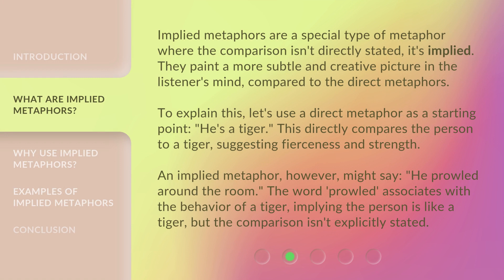Implied metaphors are a special type of metaphor where the comparison isn't directly stated — it's implied. They paint a more subtle and creative picture in the listener's mind, compared to direct metaphors. To explain this, let's use a direct metaphor as a starting point: 'He's a tiger.' This directly compares the person to a tiger, suggesting fierceness and strength.